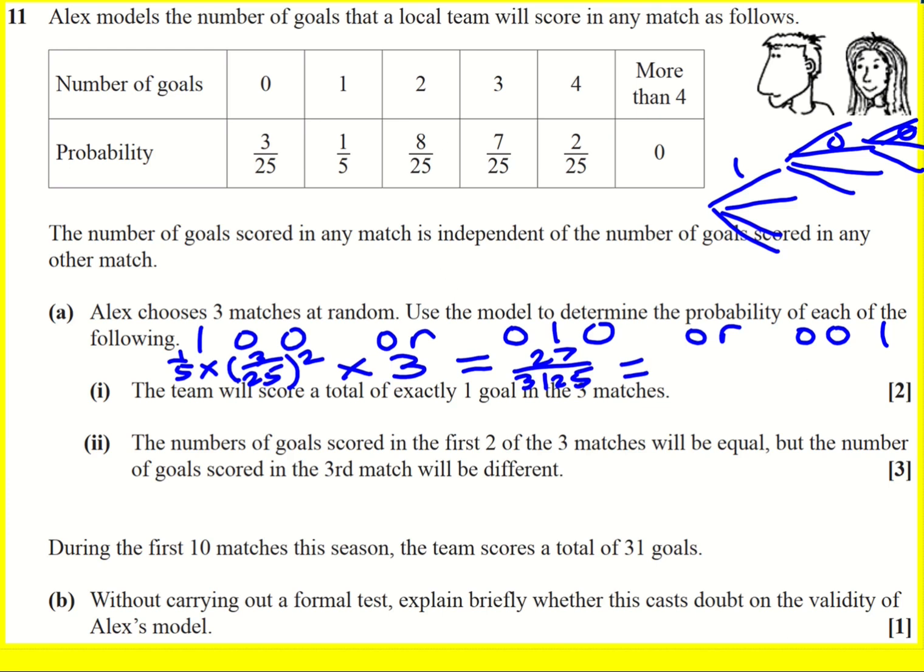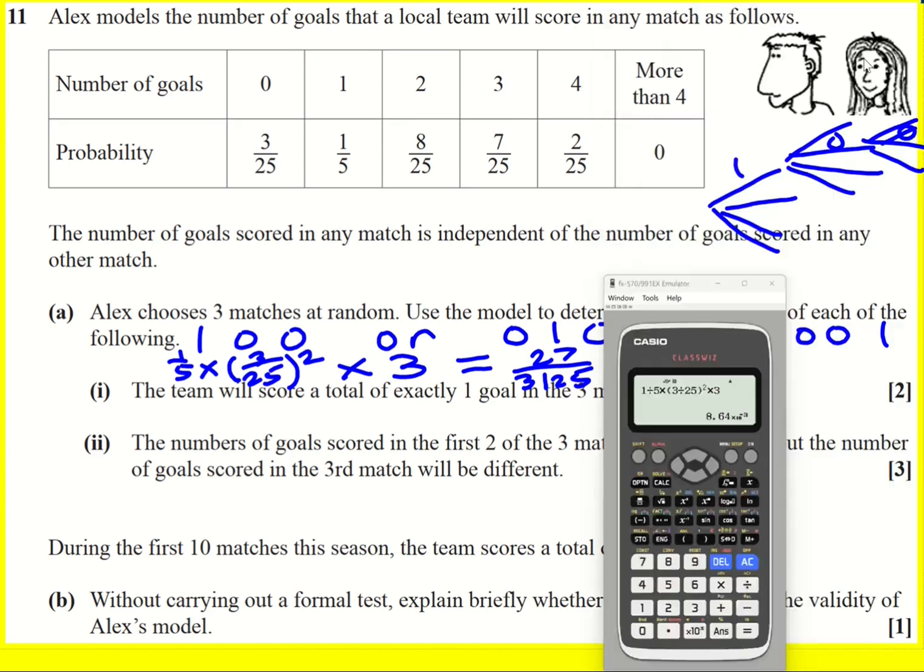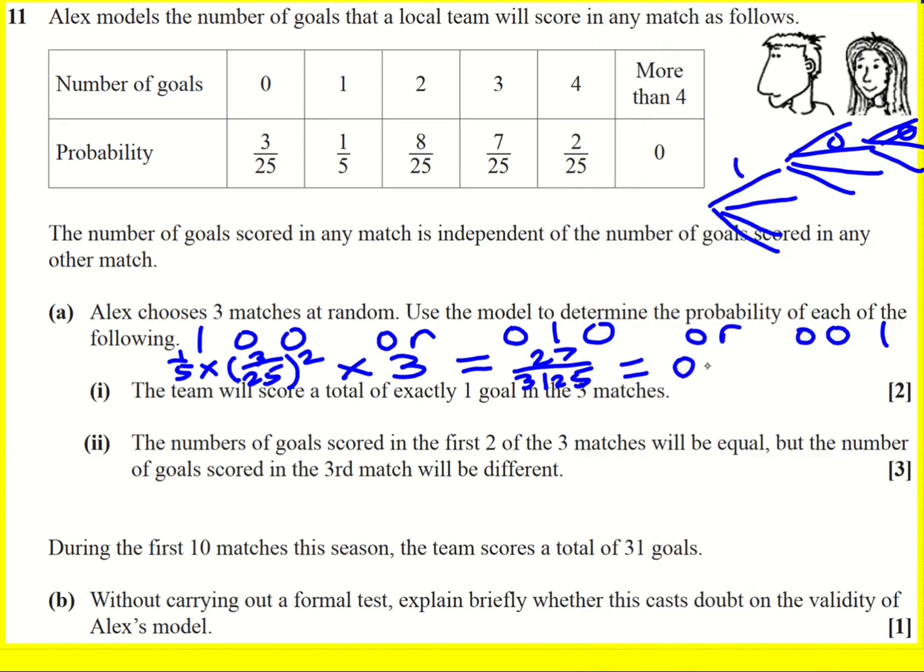Now, that is accepted by the mark scheme. Arguably, it's a nice exact answer. The thing is, it is a model. And so I think it's a bit better to give it to three significant figures. So 8.64 times 10 to the minus 3, which is going to be 0.00864. So I'm going that as my final answer, a very small probability.